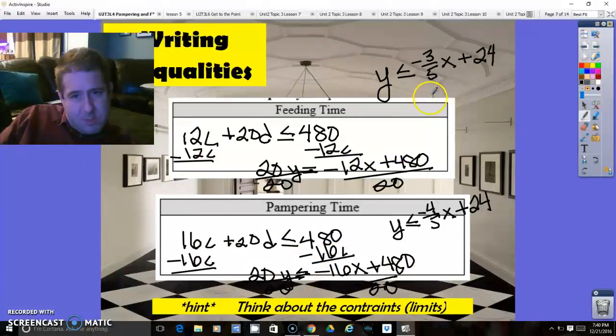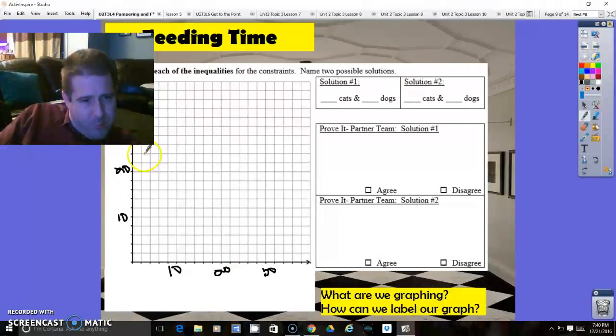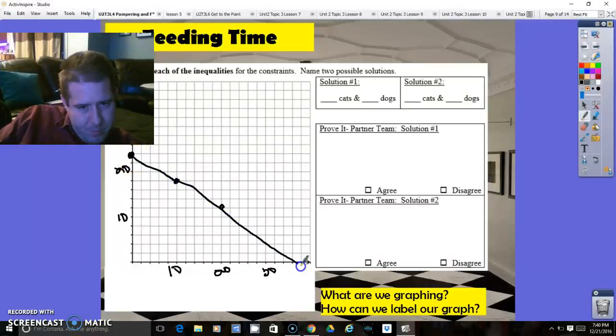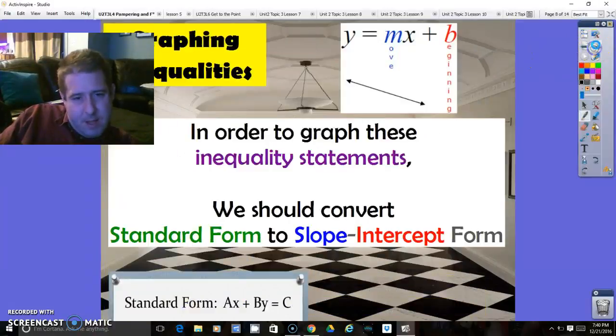So if I want to graph these equations, I'm going to start with this one over here. 24 is the starting point and negative 3 fifths. So I'm using the slope negative 3 fifths. That's rise over run. So negative 3 over 5. And what you should have is a straight line. And that one represents feeding time.